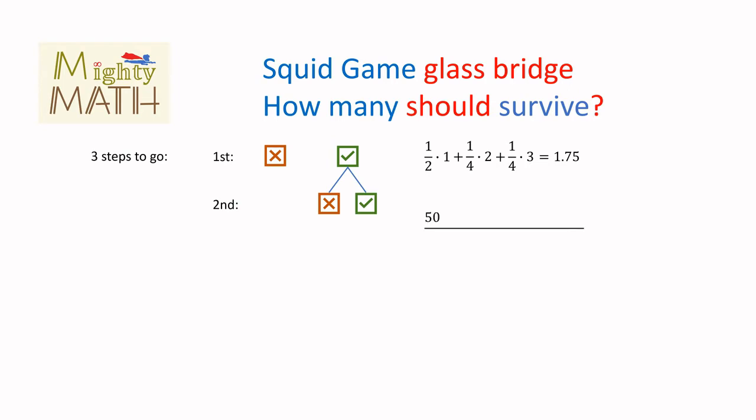Suppose we had a thousand people playing this game. We would expect about 500 of them to get the first step wrong, giving information about only one step. About a quarter of them, 250, would get the first one right and the second one wrong, giving information about two steps. And the rest, another quarter, would get both steps right, giving information about three steps.